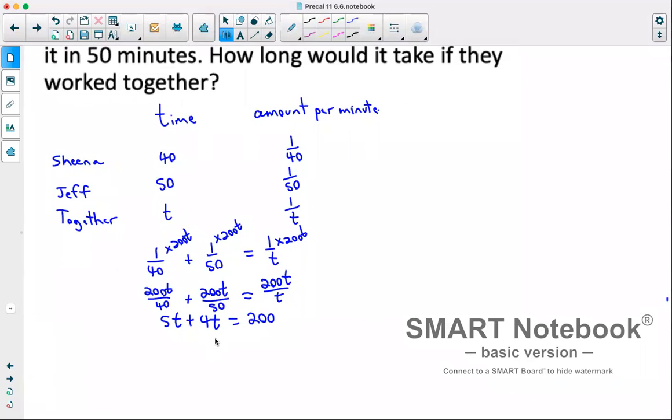So we have 5T plus 4T, that's 9T equals 200. Divide both sides by 9. Now we get the time that would take them if they work together would be 22.2 minutes.